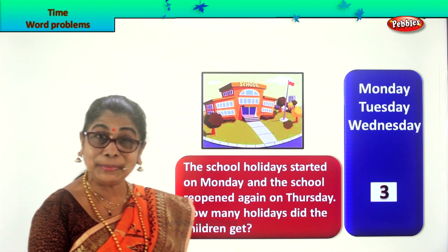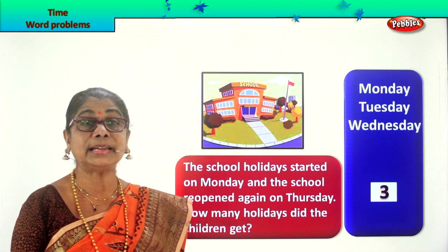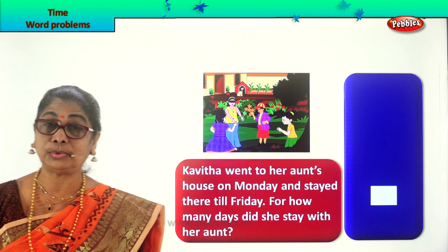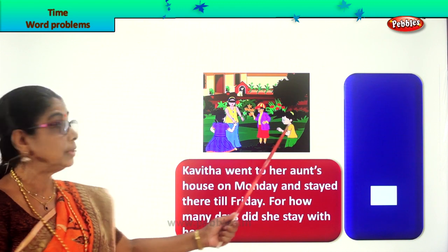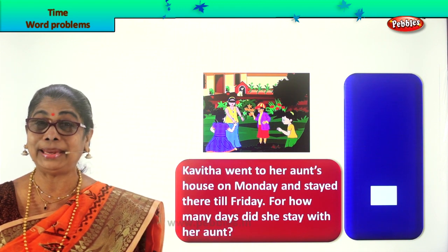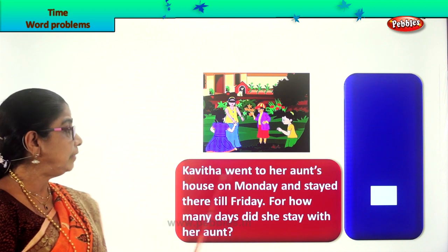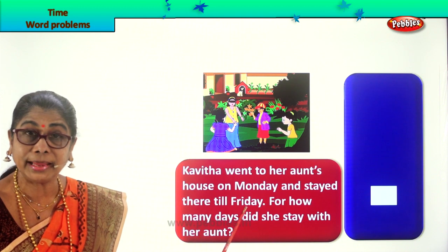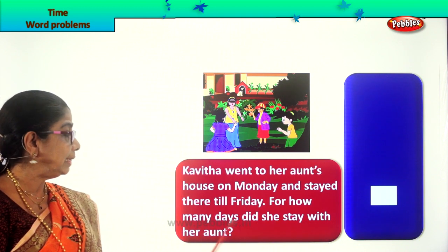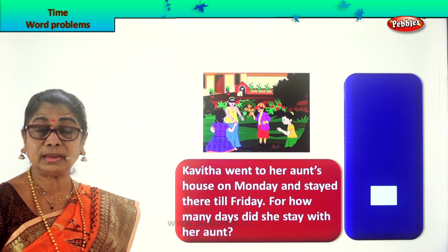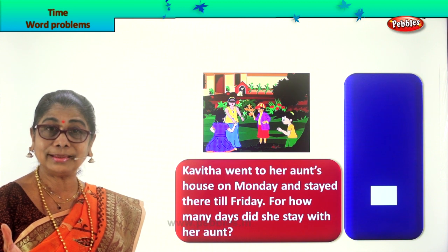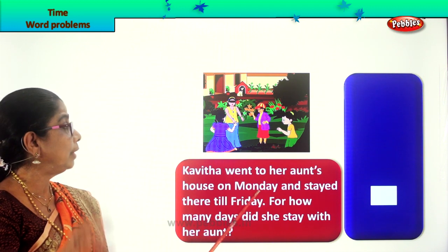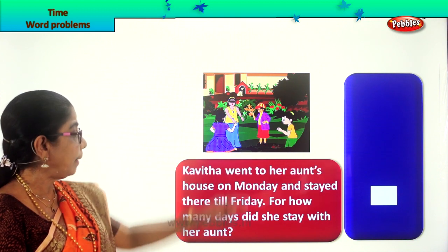Did you enjoy the problem in time? Good. Let's look at another one in time. Let's read together. This is Kavita's aunt's house. Kavita is traveling all the way and going to her aunt's house, and there are cousins there, playing happily. Let us read the problem: Kavita went to her aunt's house on Monday and stayed there till Friday. For how many days did she stay with her aunt? That is the question. So we are going to count. Kavita went to her aunt's house on Monday, then Tuesday, Wednesday...